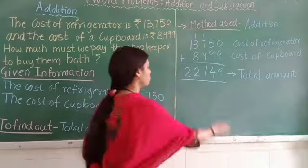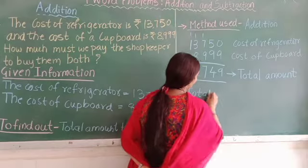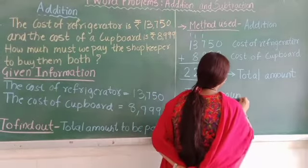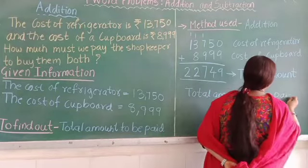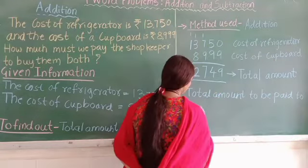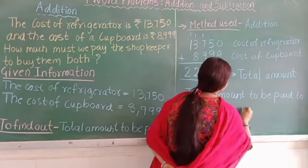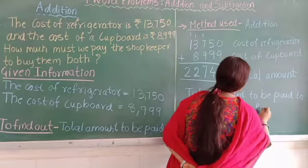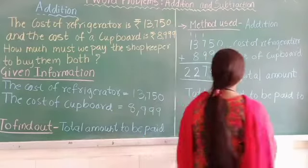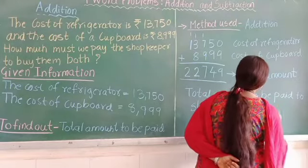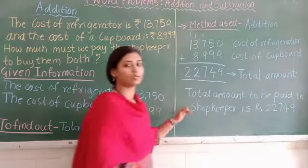So here we write the final statement: Total amount to be paid to the shopkeeper is Rs. 22,749. This will be our final statement.